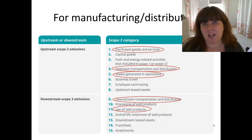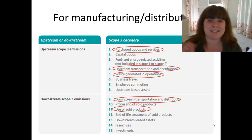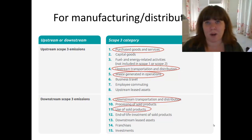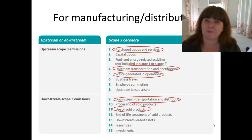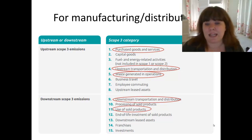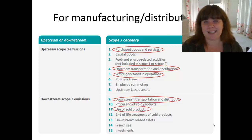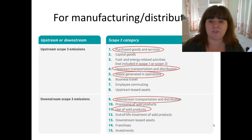Then there's waste generated in operations. Waste is actually higher in manufacturing and distribution — even if you're just running a warehouse, the amount of waste generated from packaging materials alone can be quite significant. And then downstream: after the product or service leaves your hands, you also want to be thinking about downstream transportation and distribution — how is your product getting into the distribution center or onto the retail shelves?